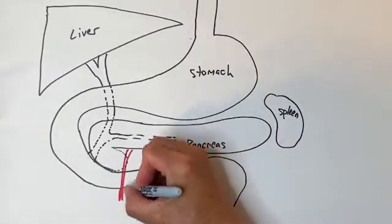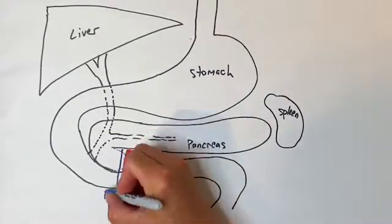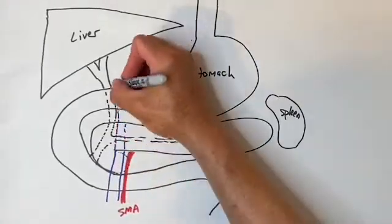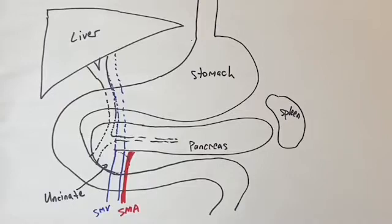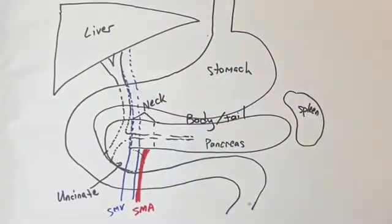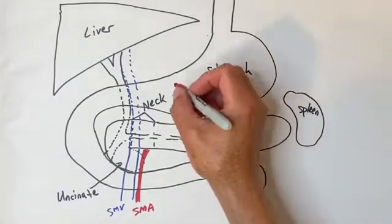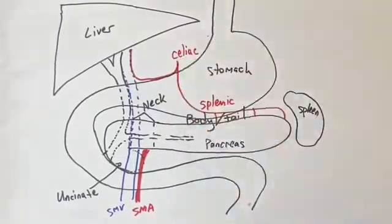This is ABSITE and board review for benign pancreas. The pancreas sits behind the stomach, and the duodenum wraps around the head of the pancreas. Important relationships to know: the superior mesenteric vein lies lateral to the superior mesenteric artery, and the uncinate process wraps around and under these. The neck of the pancreas is the portion overlying the mesenteric vessels; the body and tail are everything to the patient's left side of the mesenteric vessels.